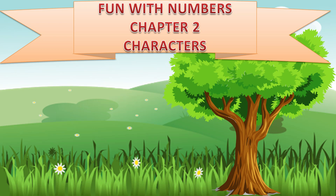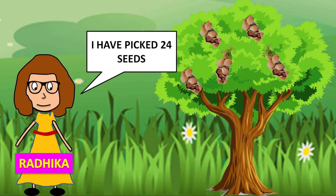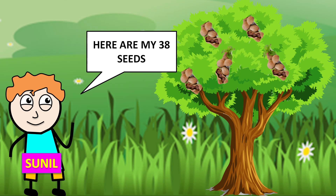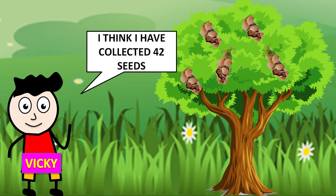Today I am going to teach you Fun with Numbers, Chapter 2, Class 3. The characters in this lesson are Sunil, Gauri, Radhika, Indra, and Vicky. Radhika said she picked 24 seats, Gauri got 47 seats, Sunil has 38 seats, Indra got 54 seats, and Vicky collected 42 seats.